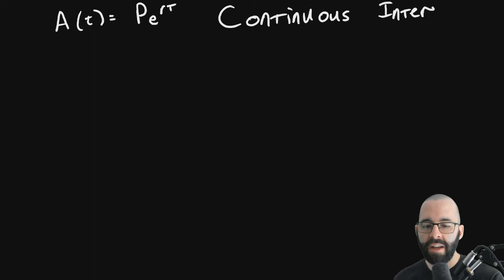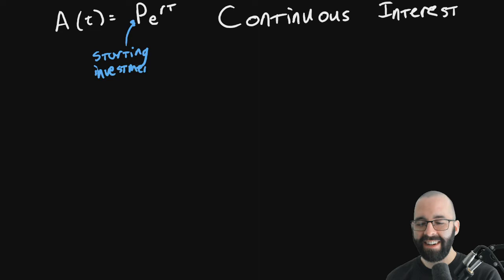So if we're looking at continuous interest, we have a formula for that. It's much nicer. Compare this to our compound interest formula. This looks much nicer. Right? Instead of that whole thing in the parentheses, it's just an E now. And then the exponent is a little different, but it's very, very close. Again, just like before, P is the principle, starting investment. Just like before, R is the interest rate. Just like before, T is the number of years. Don't have to worry about N at all.